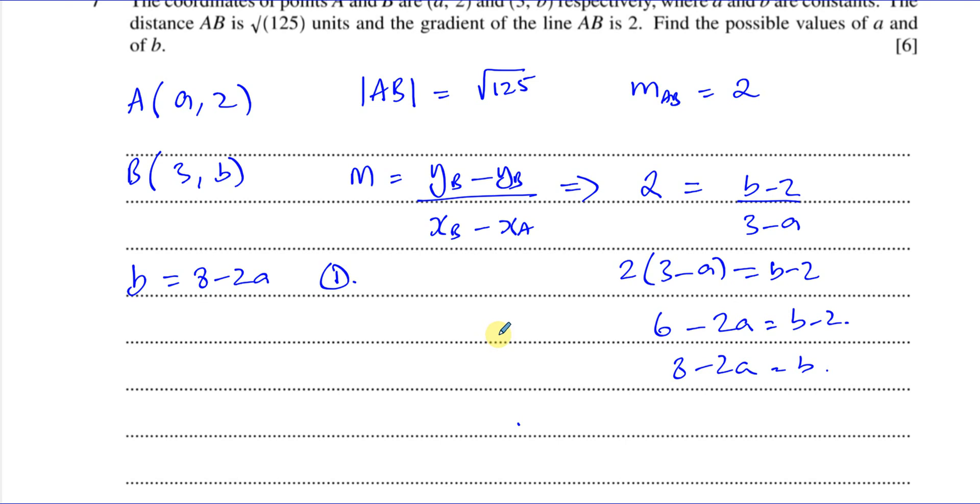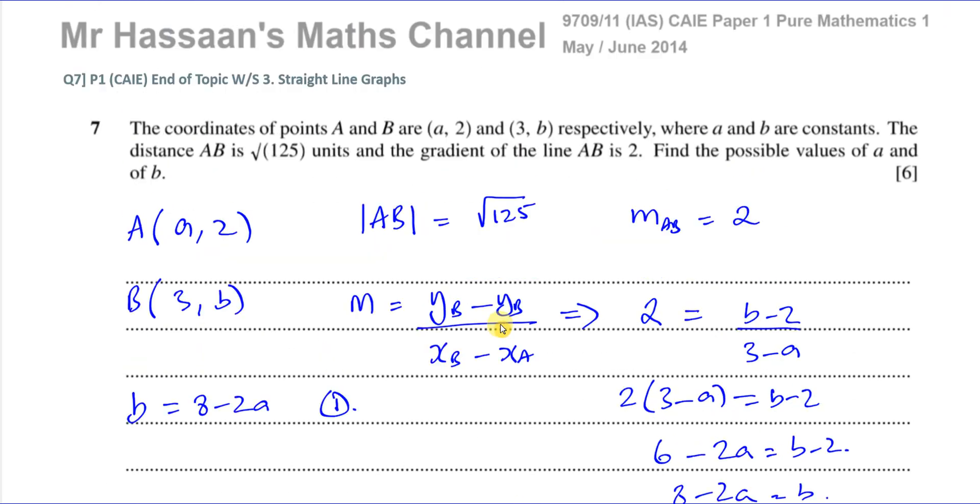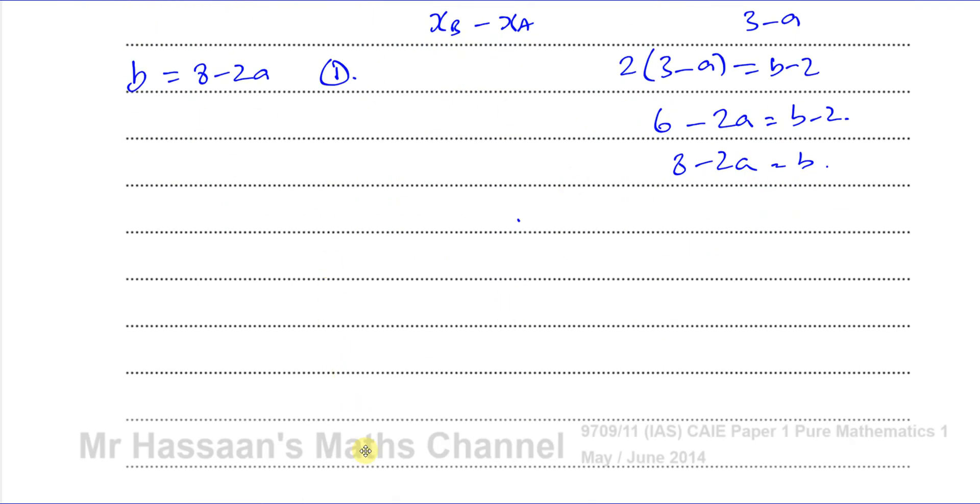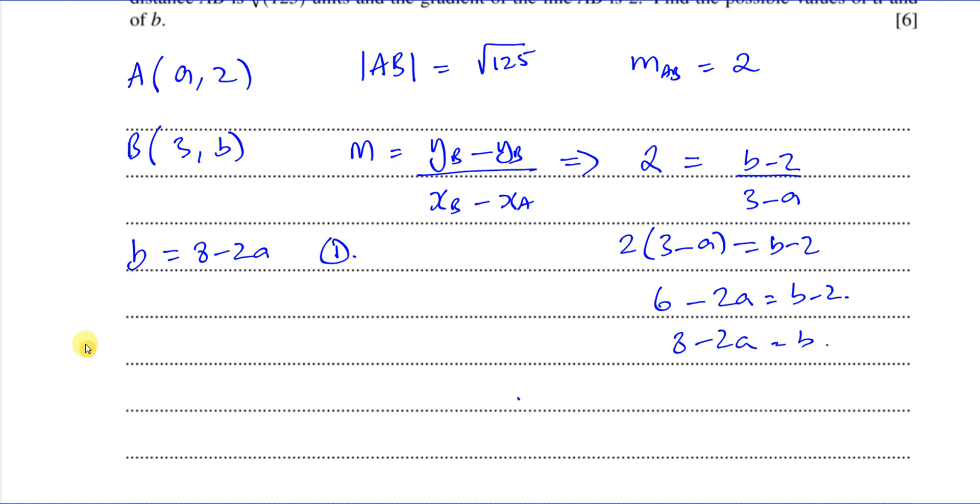Then I can use the fact that the length of the line is the root of 125. So the magnitude of AB is 125. I can use the length formula here based upon Pythagoras' theorem. If I want to find the length between two points A and B, I know that it's equal to the square root of the difference between the x-coordinates, so xA minus xB squared, plus the difference between the y-coordinates, which is yA minus yB squared. It doesn't matter if I put xB minus xA or yB minus yA.